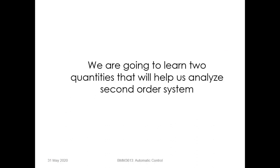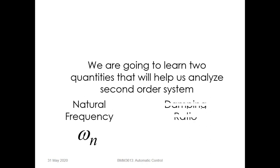We are going to learn two more quantities that will help us analyze second-order systems. The first quantity is natural frequency, which has the symbol omega-n, and the second quantity is damping ratio, which has the symbol psi.